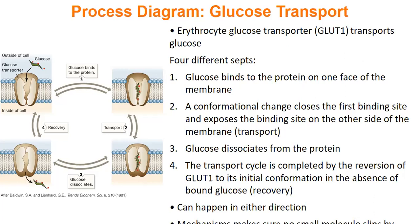GLUT1 has a pore that is only open to one side of the cell at a time — either the outside or the inside. What happens during GLUT1 transport is: glucose will bind to the pore, and once bound, the pore will go through a conformational change. The opening that was there closes, and the pore will open to the outside of the cell. Glucose will dissociate, and once dissociated, the pore does not want to remain in that conformation, so it reverts to the original conformation.